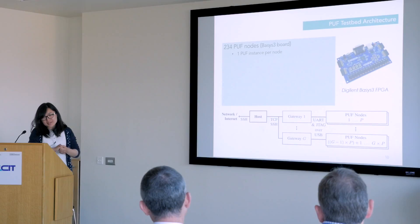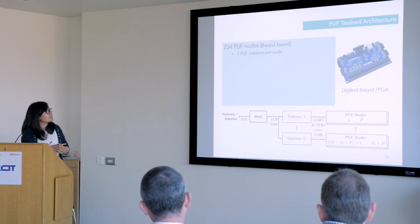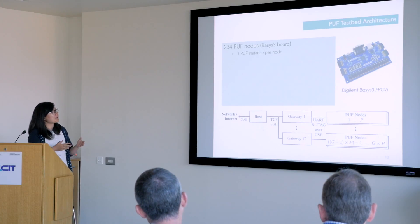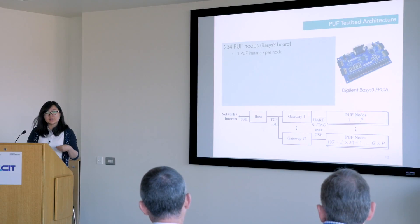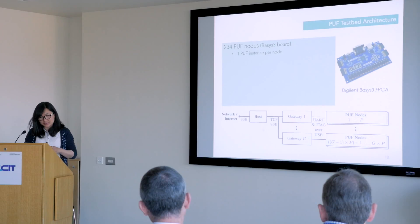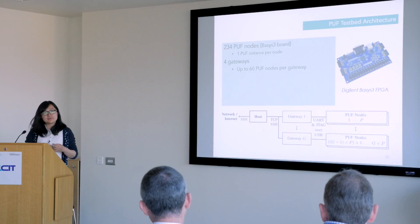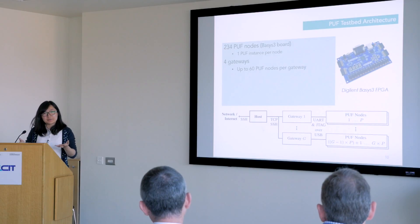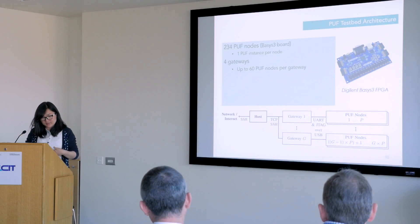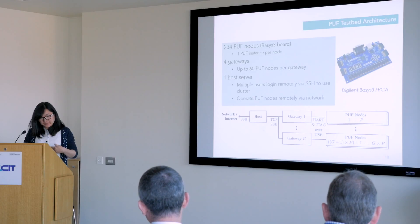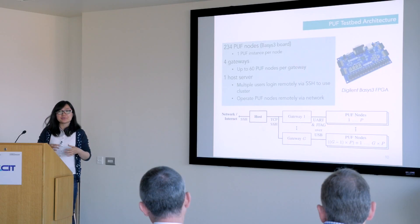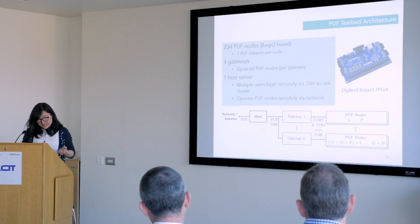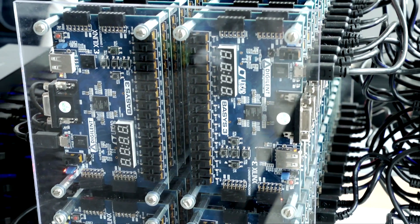For this project, to evaluate the PUF we set up a test bed. In the architecture of this test bed, we have 234 PUF nodes — each node is one Digilent Basys 3 board. We also have four gateways, each linking up to 60 nodes, and one host server, so users can access this test bed remotely through the network. For more details about this test bed, Robert will show you in the demo later.